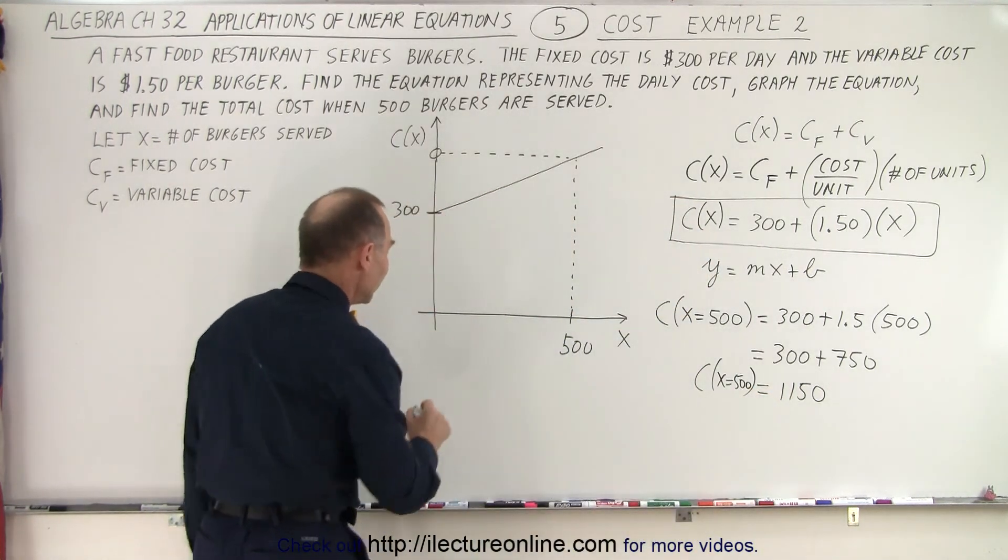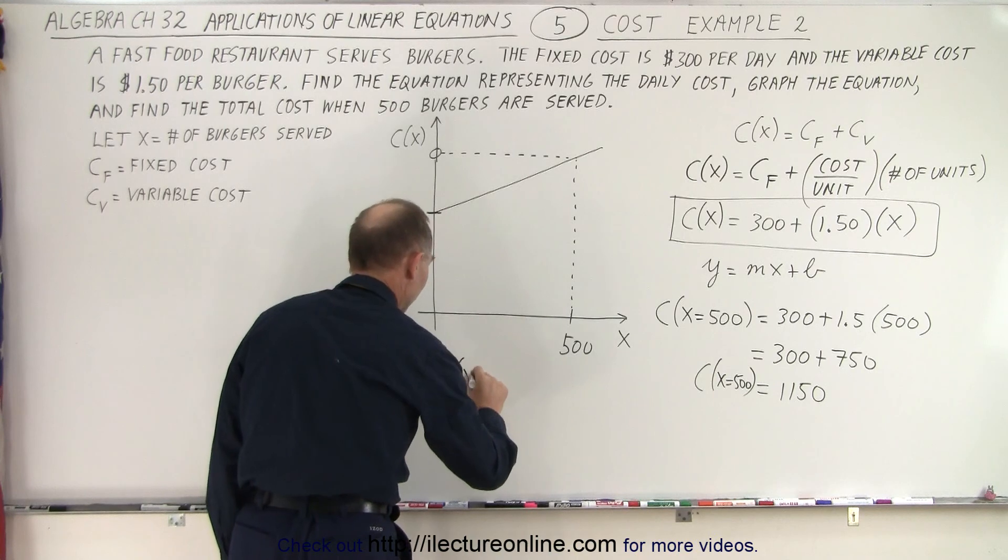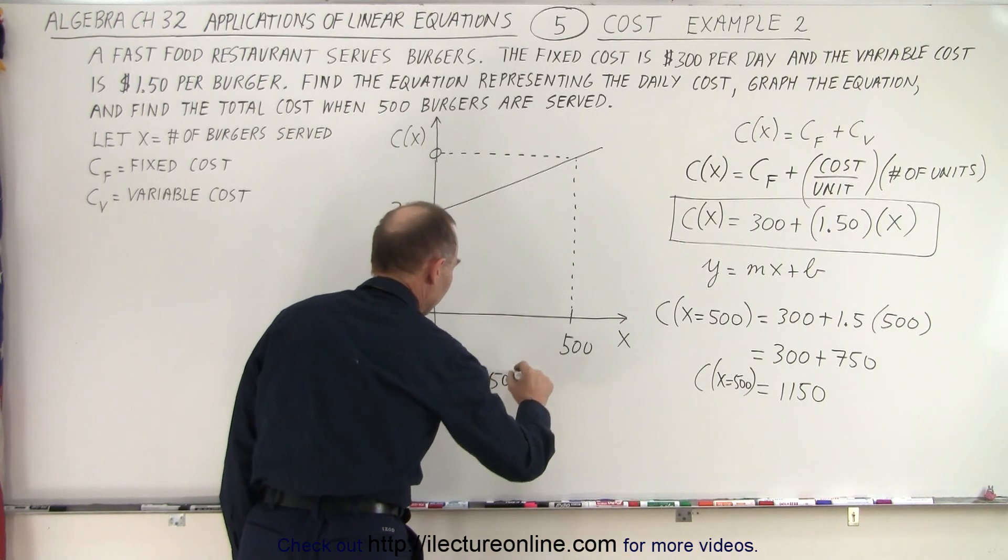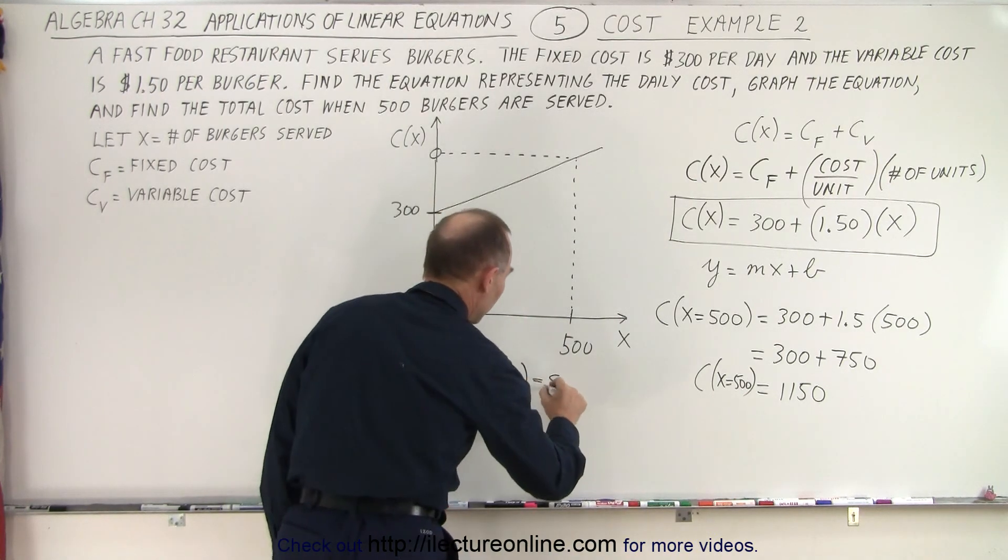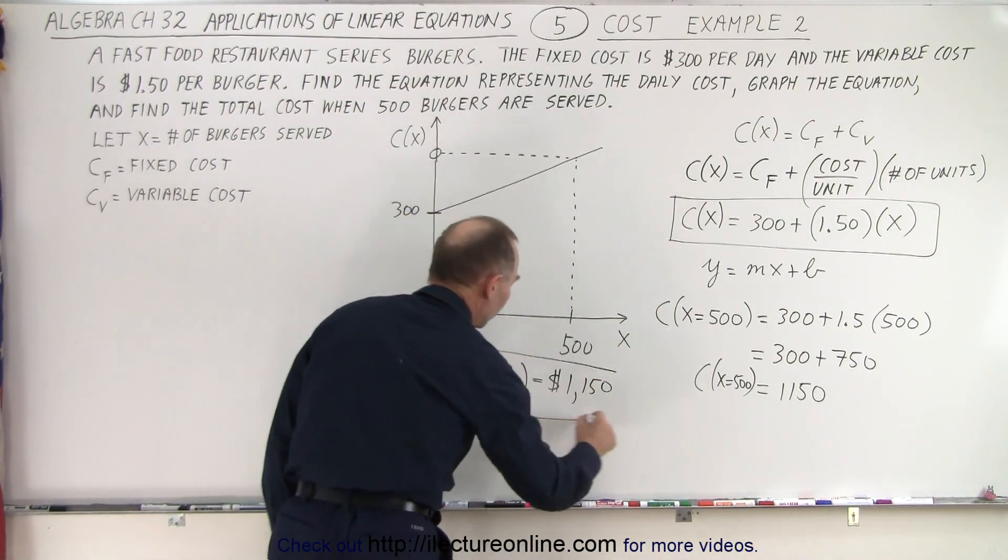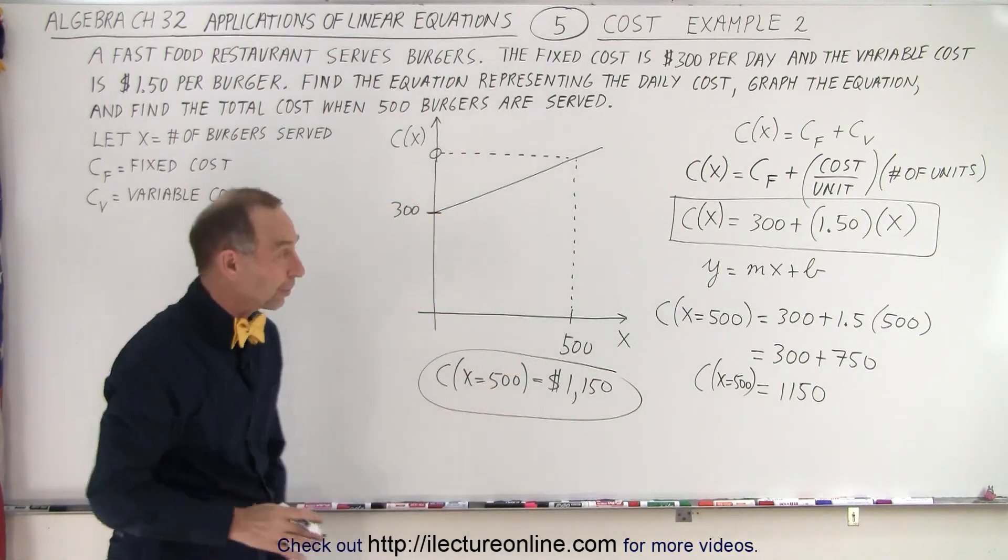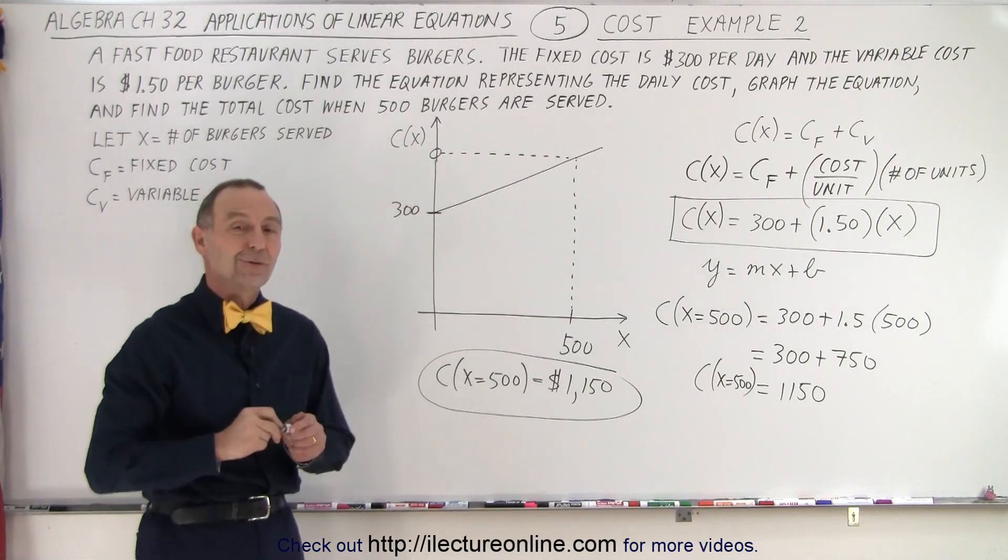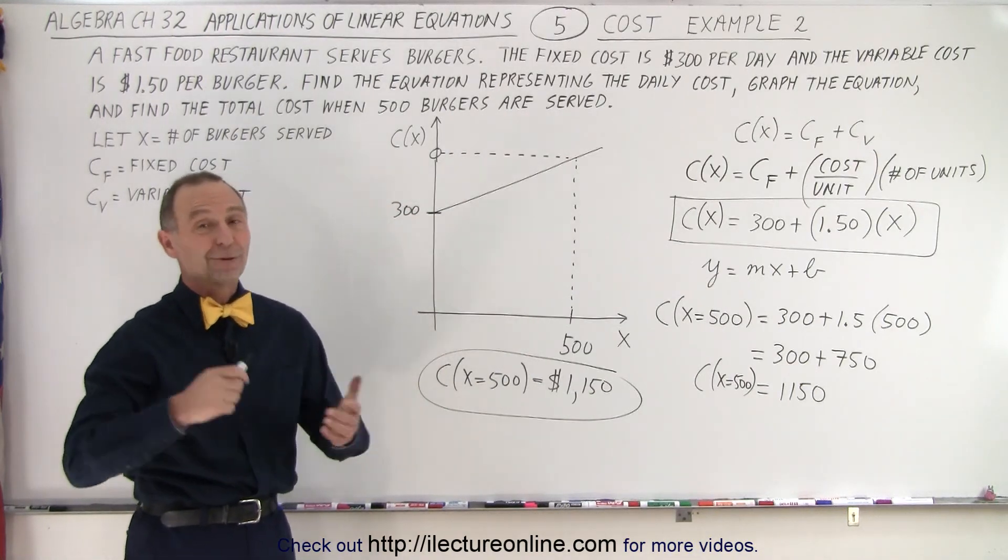There we go. And that means that the cost when x equals 500 can then be written in terms of dollars. It would be $1,150. And that would be the cost of producing 500 burgers in our little fast food restaurant. And that is how it's done.